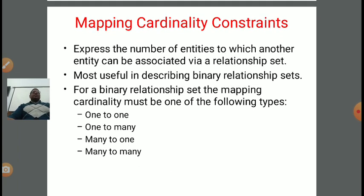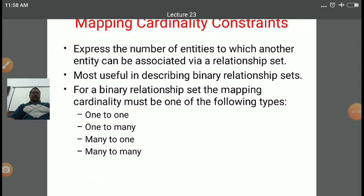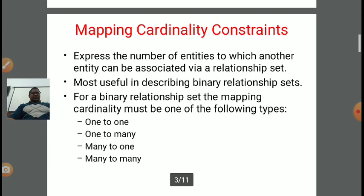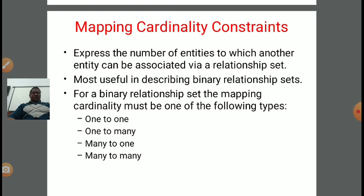Starting with constraint. Constraint is basically some condition which we need to satisfy from the database. Mapping cardinality constraints express the number of entities to which another entity can be associated via a relationship set. In a relationship, there may be one or more entities involved. If only one entity is involved, it is called unary. If exactly two entities are involved, it is called binary. If three entities are involved, it is called ternary.